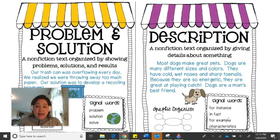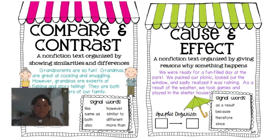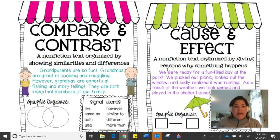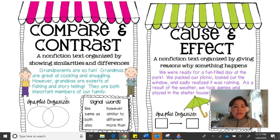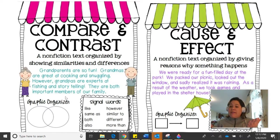We've seen lots of texts that describe a topic. Authors can also write using compare and contrast. When we compare and contrast, we are looking for how things are the same and how they are different. Let's look at an example: grandparents are so fun. Grandmas are great at cooking and snuggling. However, grandpas are experts at fishing and storytelling. They are both important members of our family. We're comparing grandmas and grandpas — how are they the same and how are they different?